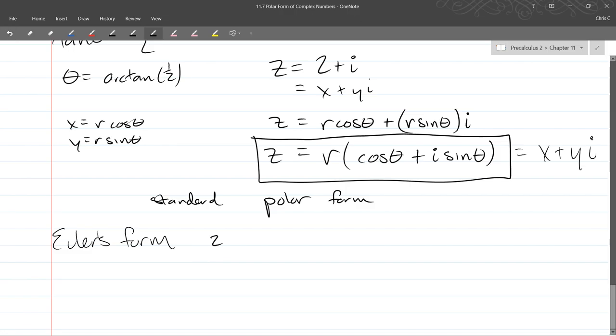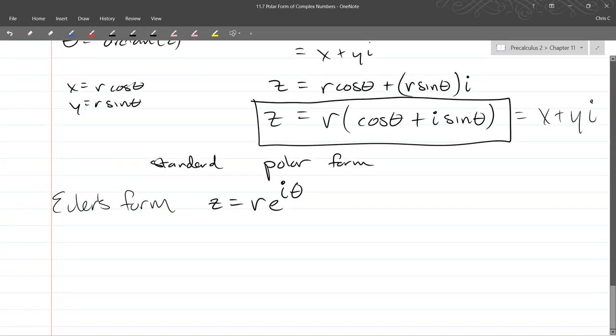Euler's form looks like r e to the i theta. Same r, but e to the i theta. So this e to the i theta part is the direction, it is this part that I underlined.